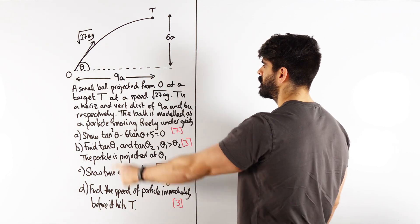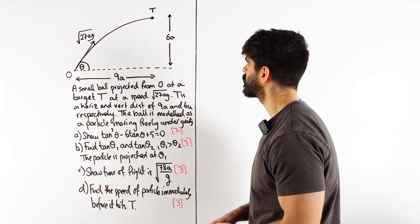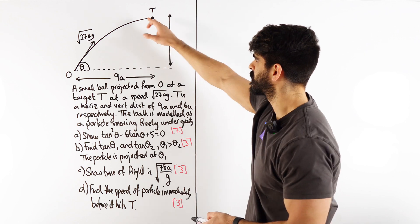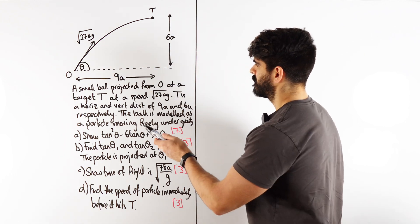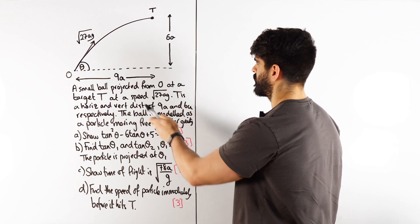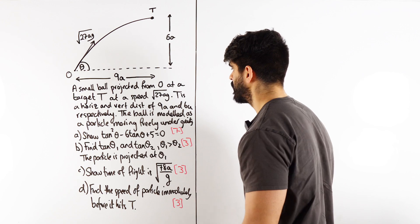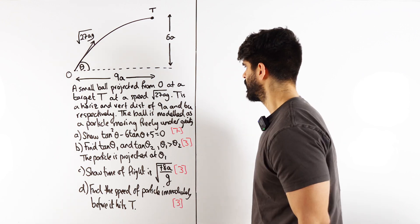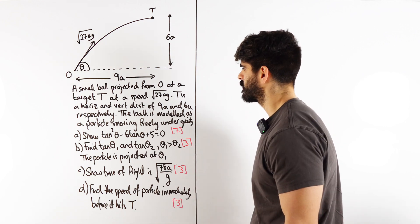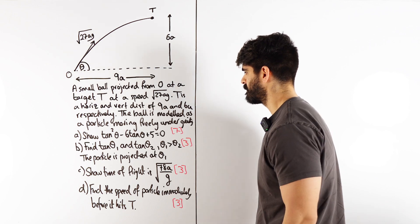A small ball is projected from O at a target T at speed root 27ag. T is at horizontal and vertical distance of 9a and 6a. I've just abbreviated everything. The ball is modeled as a particle moving freely under gravity. Show that tan²θ - 6tanθ + 5 = 0.